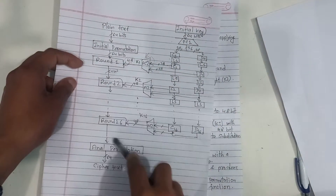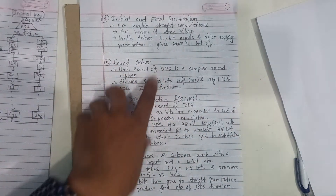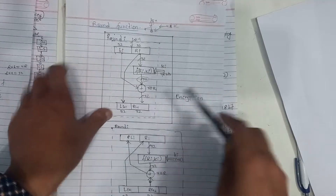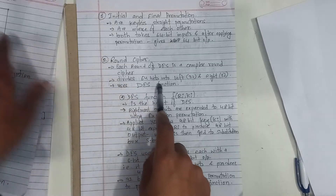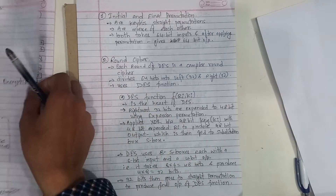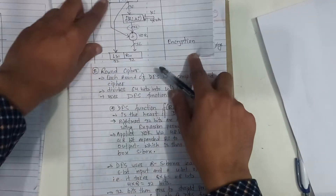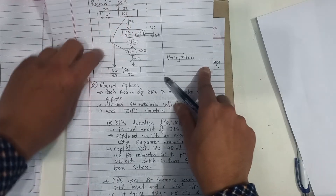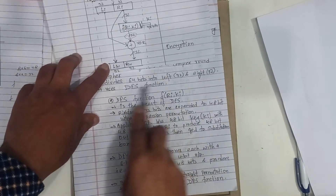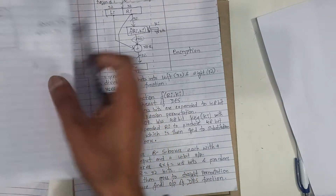Each round of DES is a complex round cipher. What the round cipher is doing is applying the DES function. Let's see the DES function.